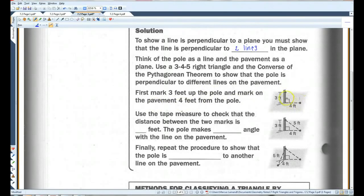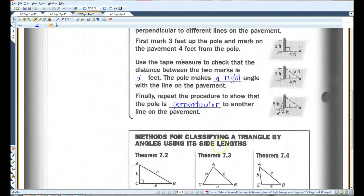Then mark on the pavement four feet from the pole. If this is a right triangle, this has to be five feet. So we use the tape measure to check that the distance between the two marks is five feet. By the way, I didn't mention this, but the reason it has to be five feet is because 3-4-5 is a Pythagorean triple. So this has to be, if this is three and this is four, the Pythagorean theorem states that this has to be five in order for it to be a right triangle. The pole makes a right angle with a line on the pavement. Finally, repeat the procedure to show that the pole is perpendicular to another line on the pavement.